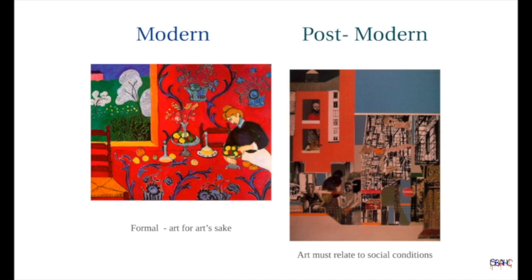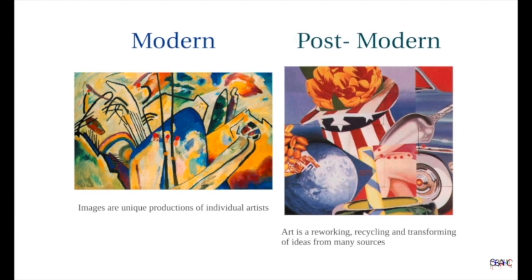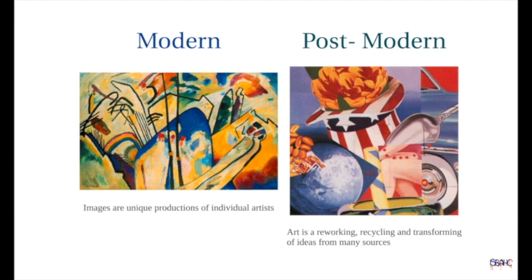Postmodern artists saw this abstract theory as isolating art from the culture at large. They wanted their art to address real life more directly. The emphasis on originality in modern art meant that individuals who created unique and original art must somehow have special insight into the human condition. In postmodern art, since nothing was truly original, all ideas were interrelated and art was a reworking of concepts to arrive at new contextual relationships.